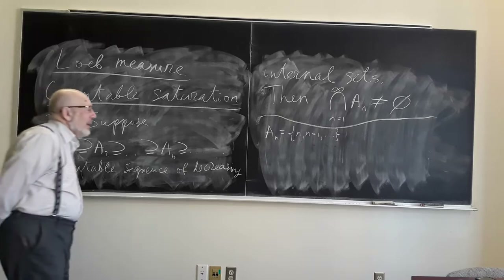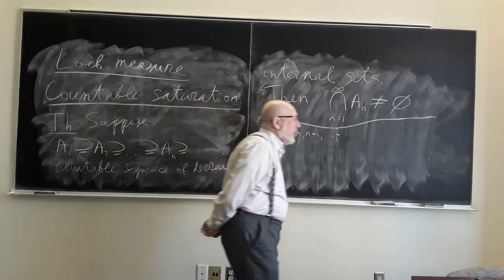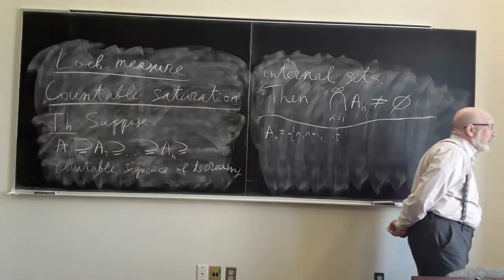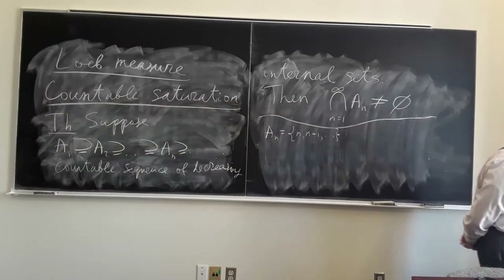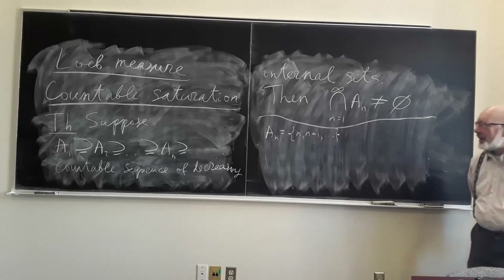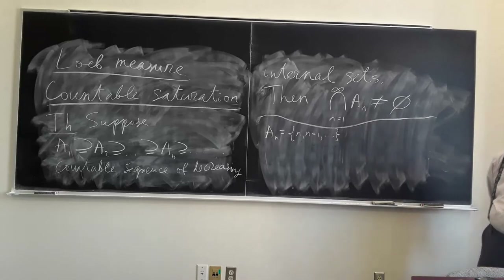This means that these sets {n, n+1, ...} are not internal — and they really are not internal, because we proved that the set N of natural numbers is not internal; it is external. A decreasing sequence of sets, if they are not internal, can have an empty intersection, but if they are internal, it always has a non-empty intersection. This shows a sort of rigidity of the structure of the non-standard universe.